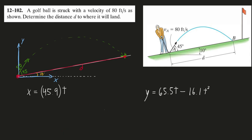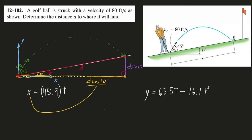We now have our x and y motion equations set up. Looking at our impact site, the x-coordinate is this length here and the y-coordinate is this length, and they form a right triangle whose hypotenuse is d and whose angle is 10 degrees. This means the x-coordinate of the impact is d·cos(10) and the y-coordinate is d·sin(10). Setting those equal in our position equations gives us the time of impact t in each.